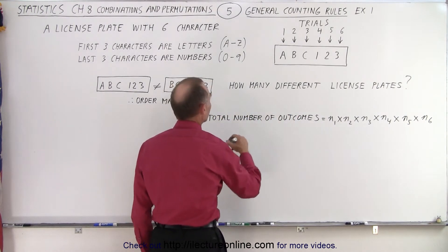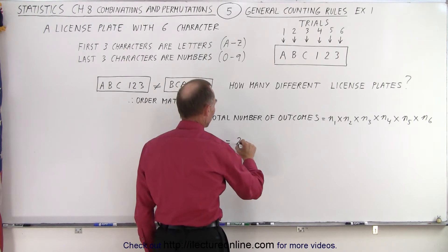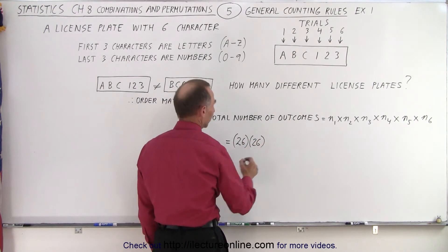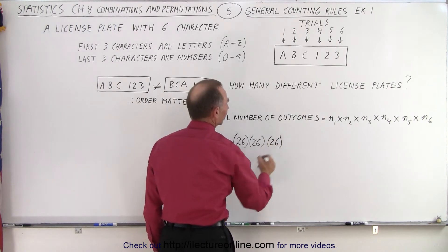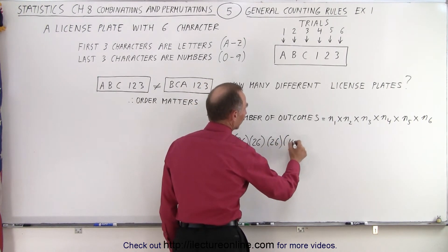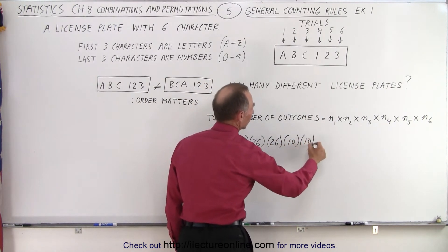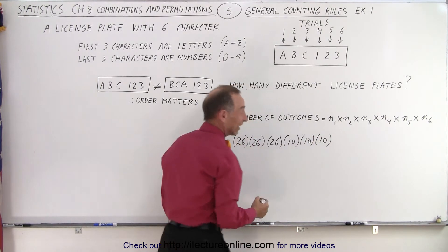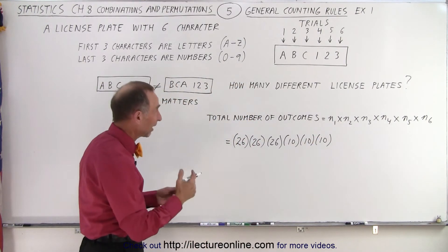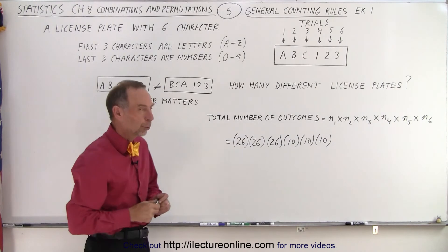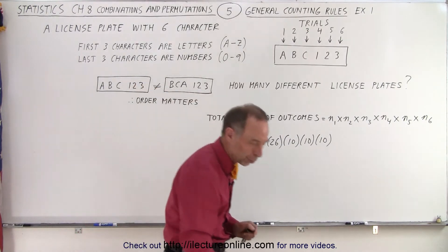So in this case that's equal to, since there's 26 letters we have 26 outcomes for the first one, 26 outcomes for the second one, 26 outcomes for the third and then 10 for the fourth, 10 for the fifth and 10 for the sixth. That's the total number of license plates we can have, in other words the total number of permutations.